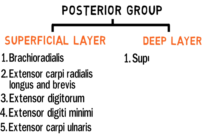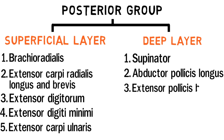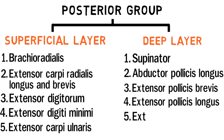The muscles of the deep layer include supinator, abductor pollicis longus, extensor pollicis brevis, extensor pollicis longus, and extensor indicis.